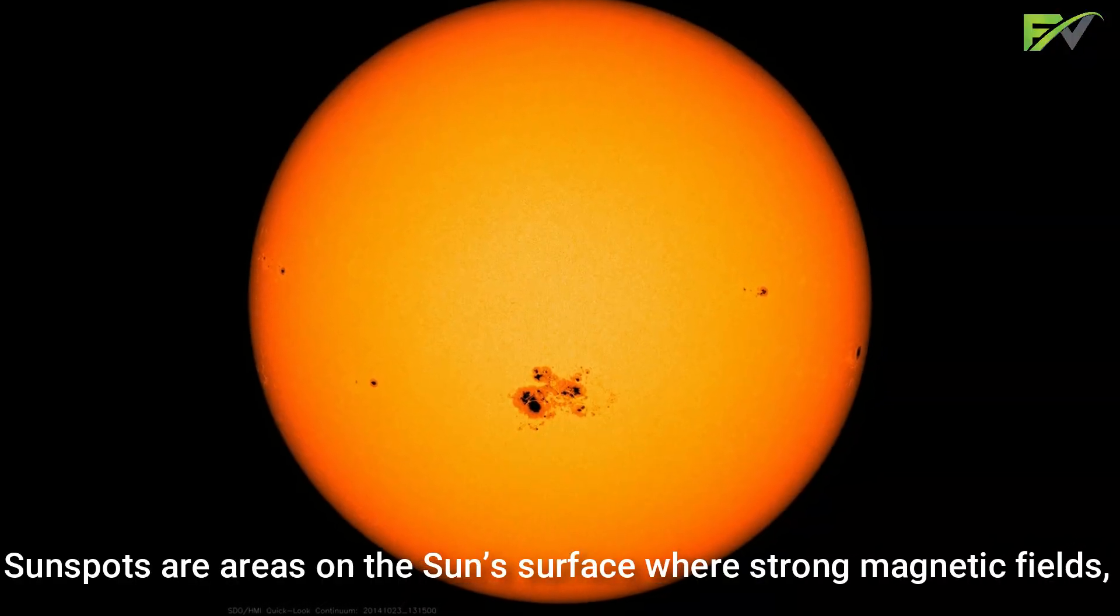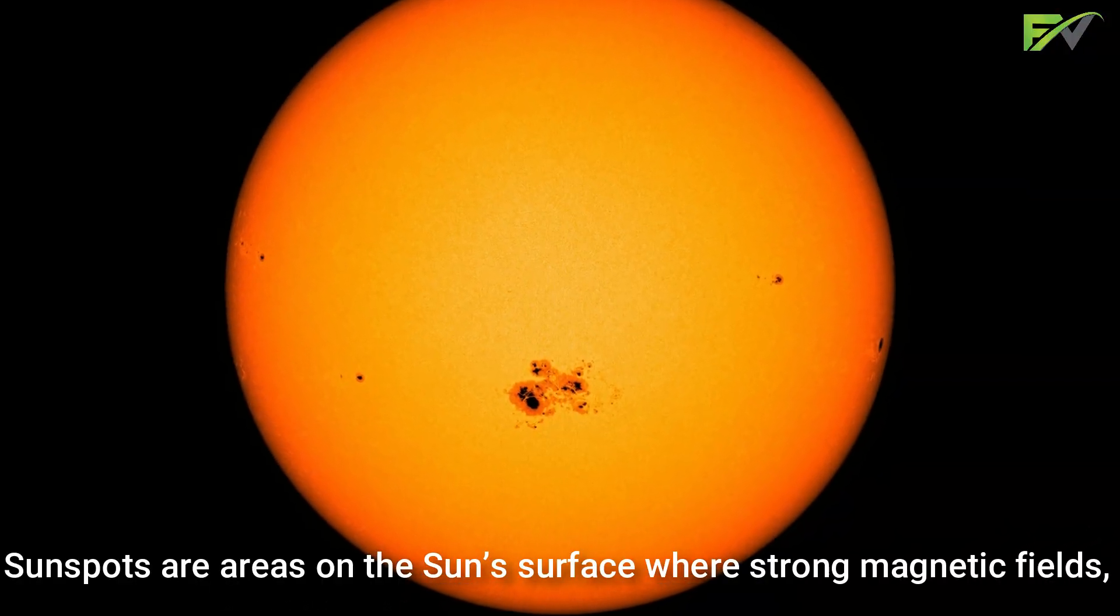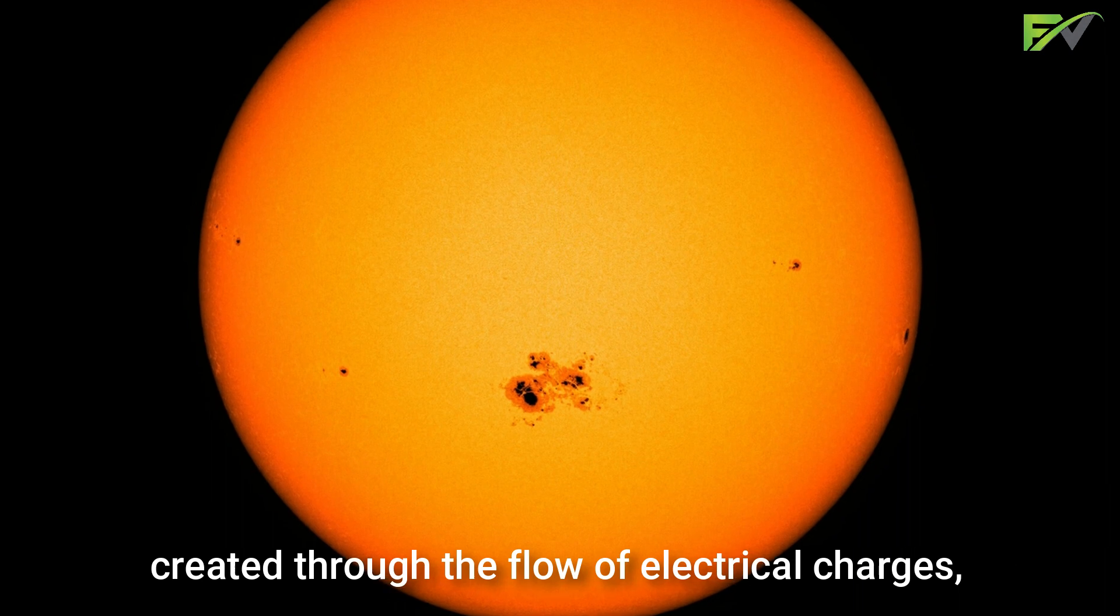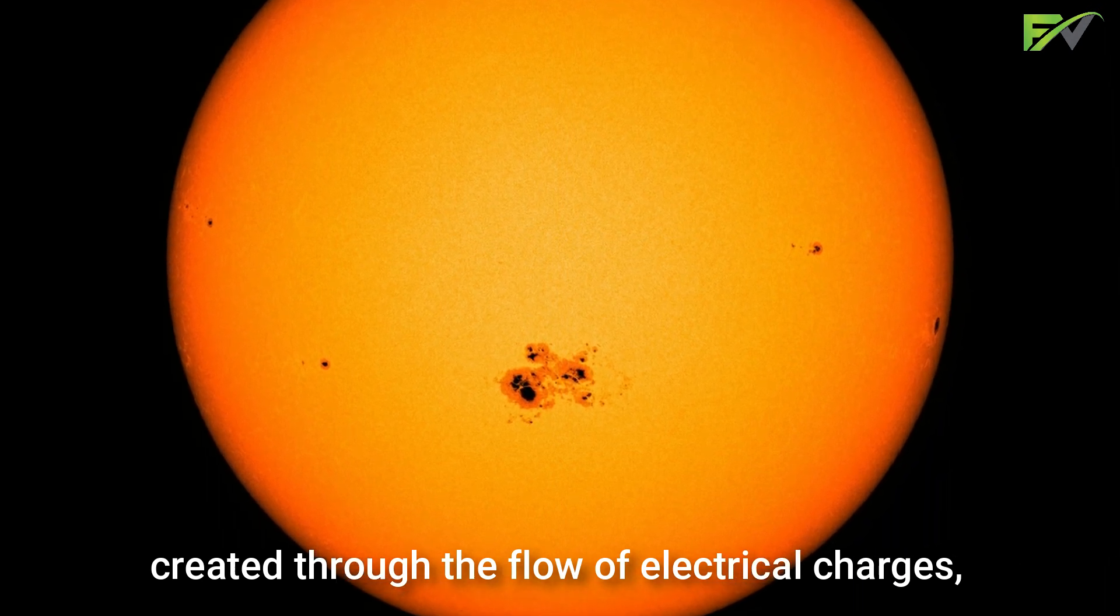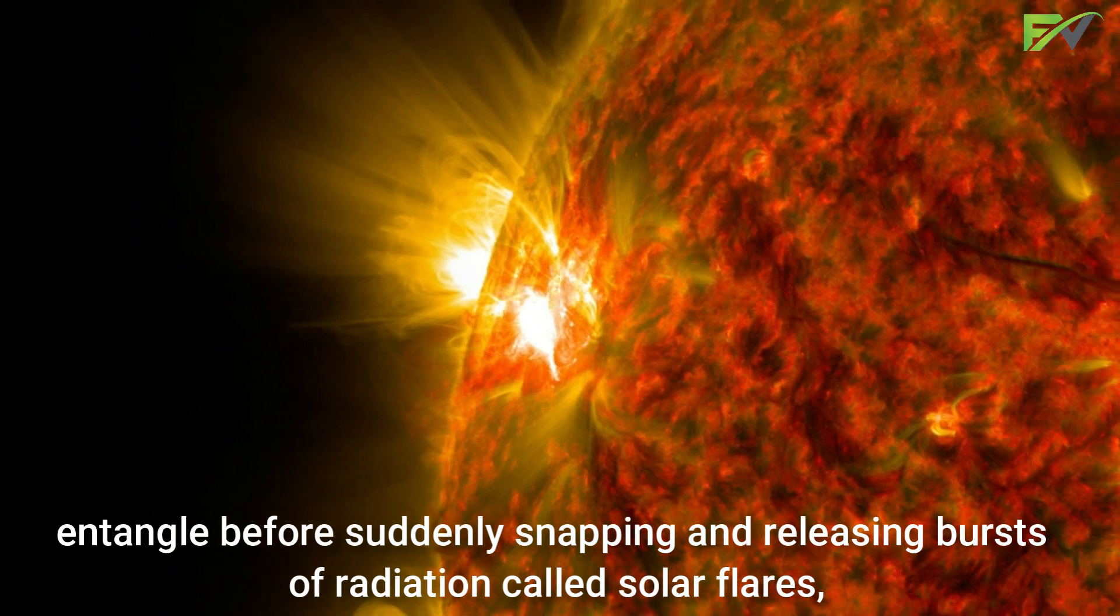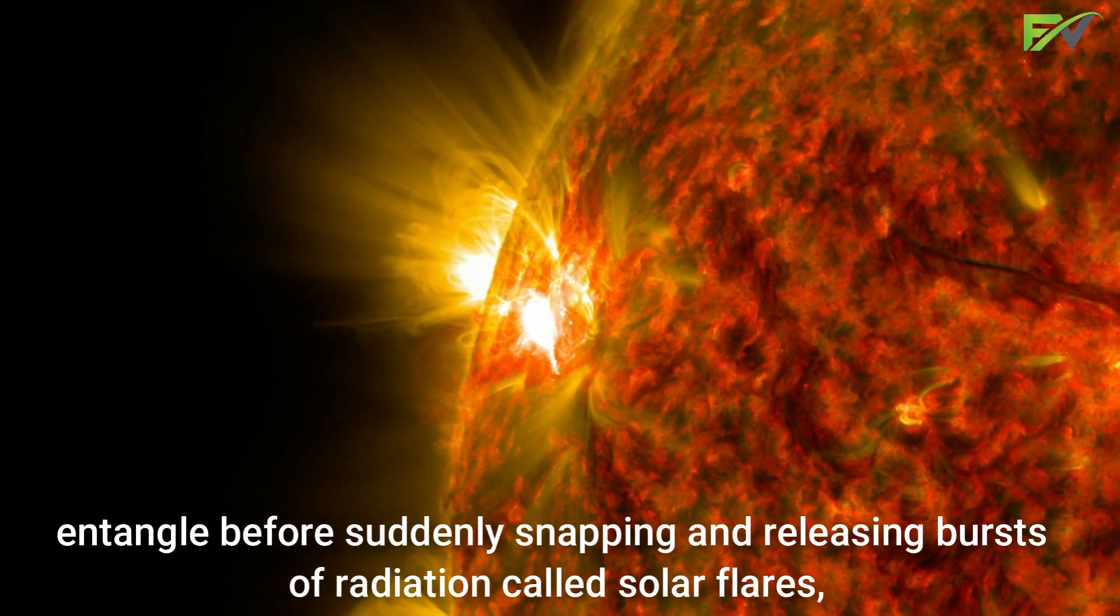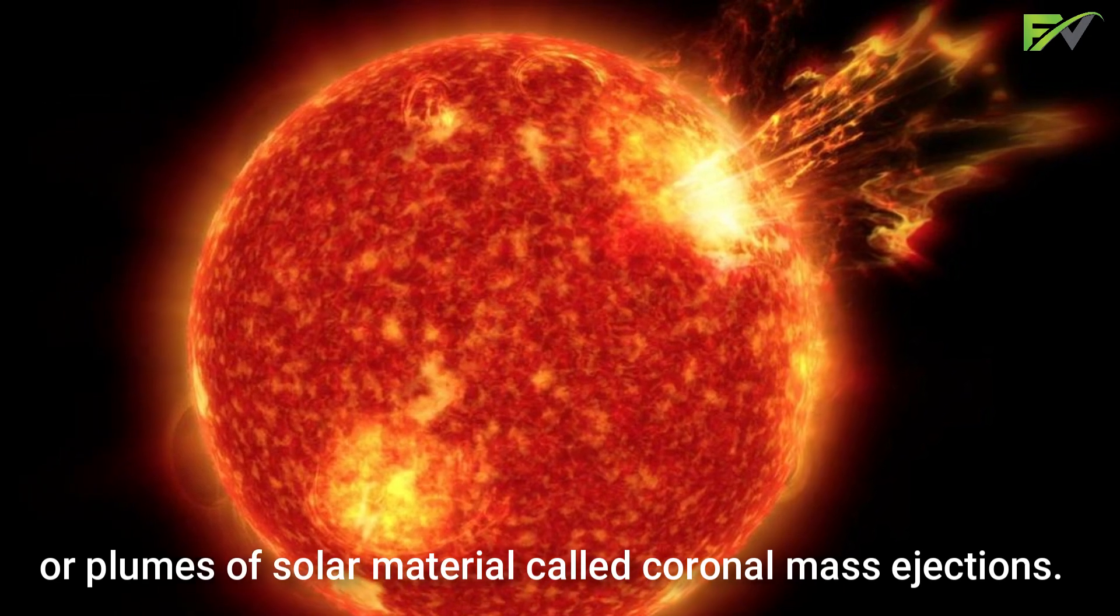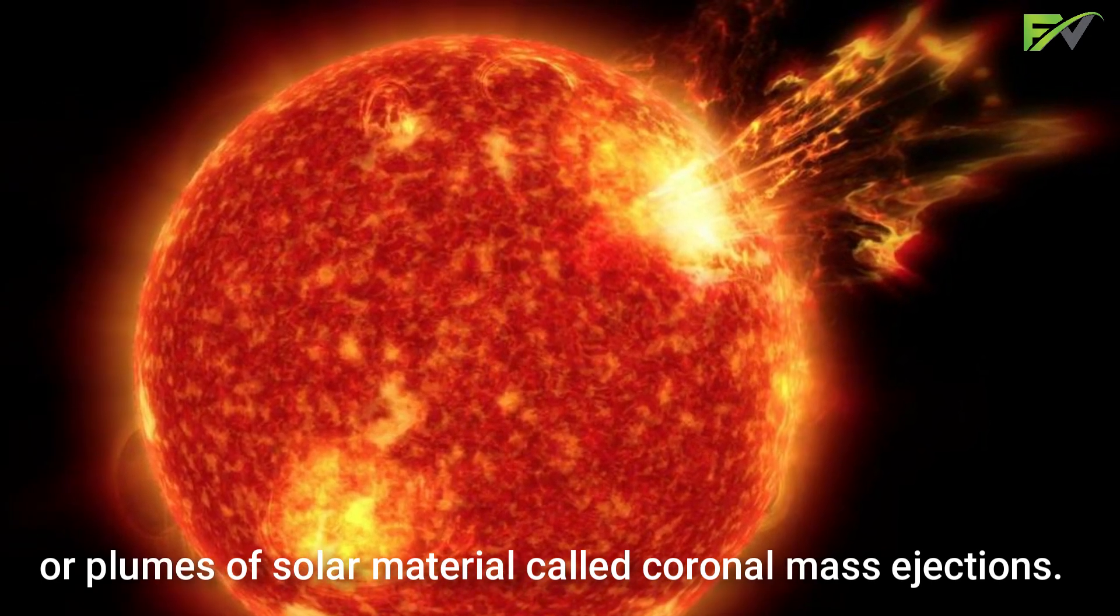Sunspots are areas on the sun's surface where strong magnetic fields, created through the flow of electrical charges, entangle before suddenly snapping and releasing bursts of radiation called solar flares or plumes of solar material called coronal mass ejections.